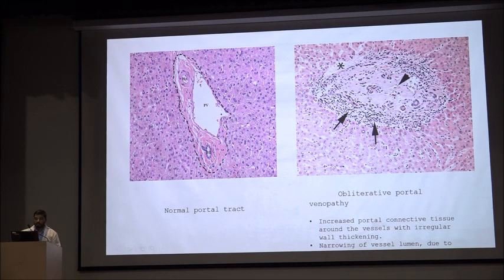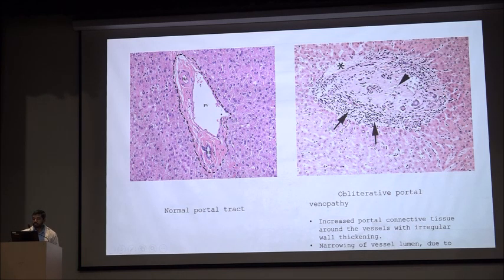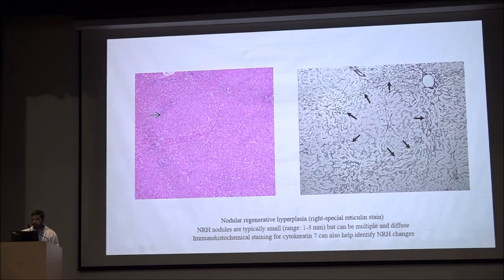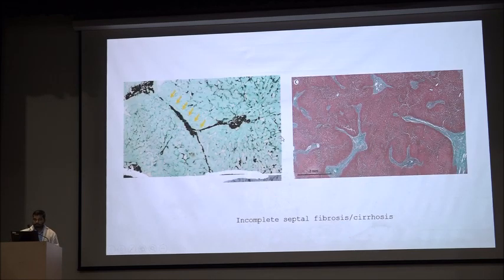Specific histological signs include obliterative portal venopathy, where there is thrombus formation and collagen deposition in the portal vein lumen. Nodular regenerative hyperplasia shows hypertrophic hepatocytes in the center and atrophic hepatocytes in the periphery on reticulin stain. Incomplete septal fibrosis is another specific sign, where fibrosis does not extend fully and there are dead ends of fibrous plates.